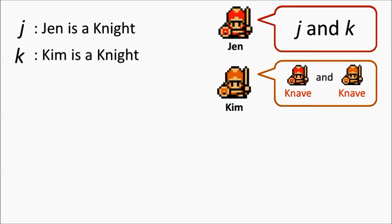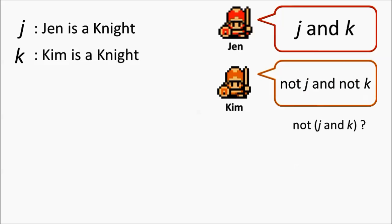Kim, on the other hand, is denying both J and K at the same time. She says not J and not K. Be careful here. Don't make the mistake that Kim is claiming not J and K. That would simply be denying that they are not both Knights, leaving the possibility that one of them is a Knight and one of them is a Knave. Since Kim is claiming that they are both Knaves, she denies J, and she also denies K.